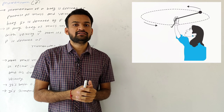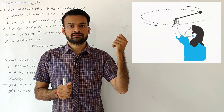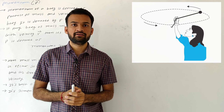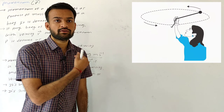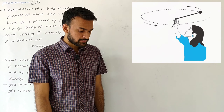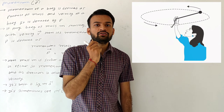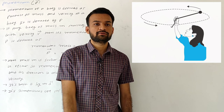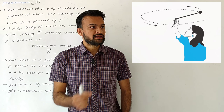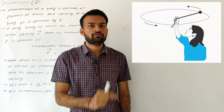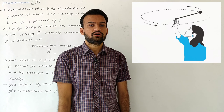The greater the rate of change of momentum, the greater the applied force. The momentum changes with respect to time due to the applied force. From this, we have Newton's second law of motion, which states that the time rate of change of momentum is directly proportional to the applied force, and the direction of the change in momentum is in the direction of the applied force.